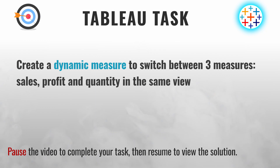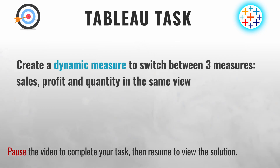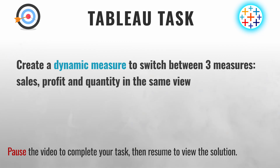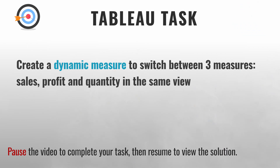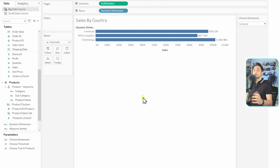Now you have a Tableau task: create a dynamic measure using parameters to swap between three measures — Sales, Profit, and Quantity — in the same view. The steps are exactly the same as with dimensions: first create the parameter, second create the logic in the calculated field.